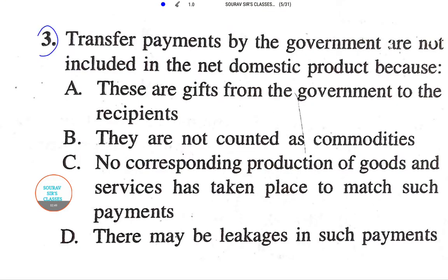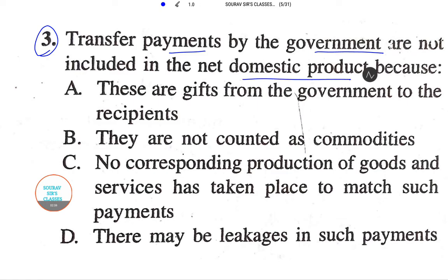Moving on, we next go to question number three. It says: transfer payments by the government are not included in the net domestic product. We need to figure out the reason why. Let us see how we are going to do it.